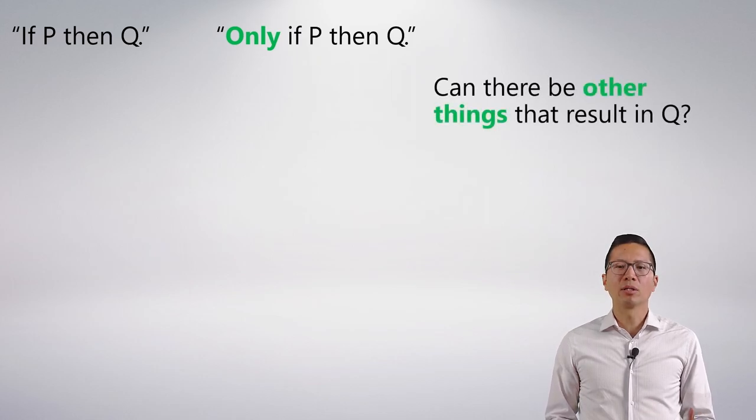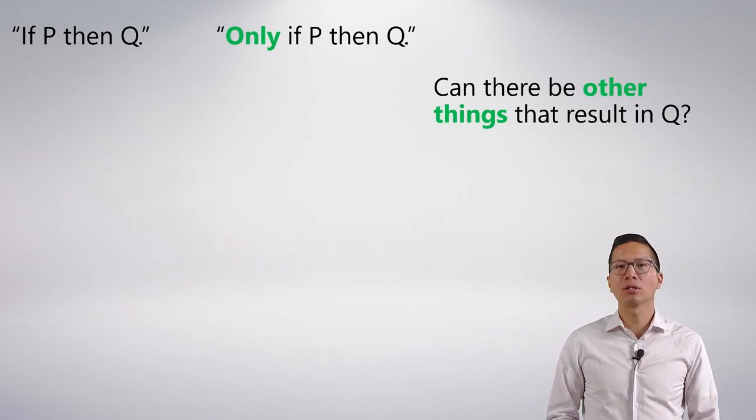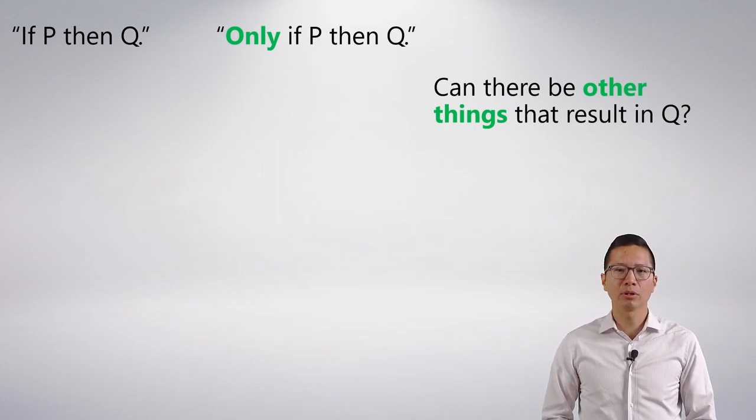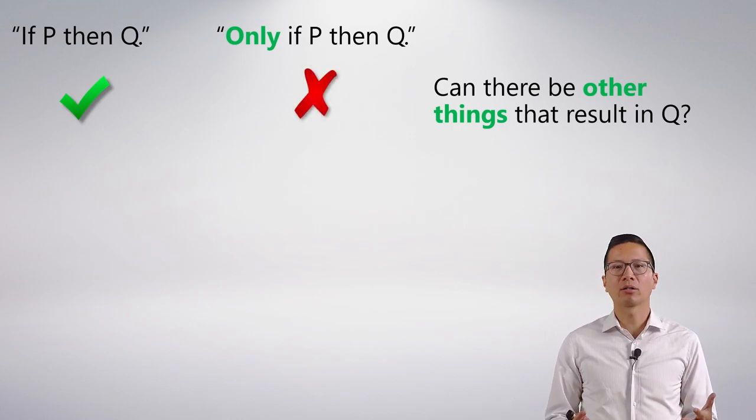So one way to think about the difference is what is allowed and what's not allowed. Can there be other things that result in Q? Can there be other factors, other world events that lead to the result of Q? Well, if I say if P then Q, it certainly can be the case that something else can also lead to Q. And we've seen this in previous examples. So it's got to be the case that other things can result in Q if I say if P then Q.